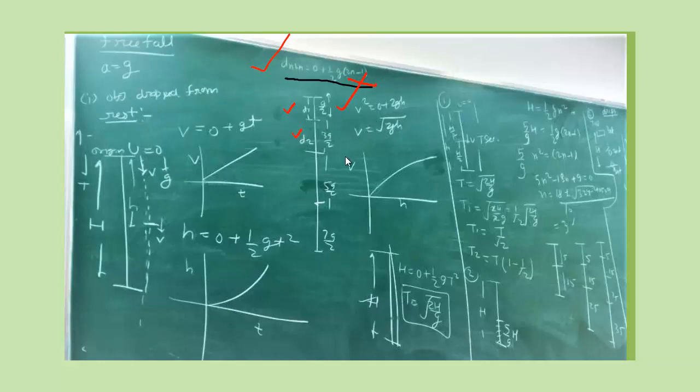t is equal to 1, t is equal to 2, which is the second second of motion. So half g into 2n minus 1 is 3, so 3g by 2. t equals 3 gives 5g by 2, then 7g by 2. This displacement is increasing. g by 2, 3g by 2, 5g by 2, 7g by 2. So the ratio is 1 is to 3 is to 5 is to 7.